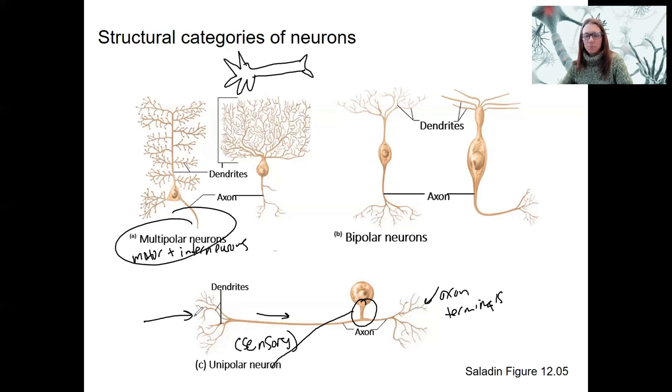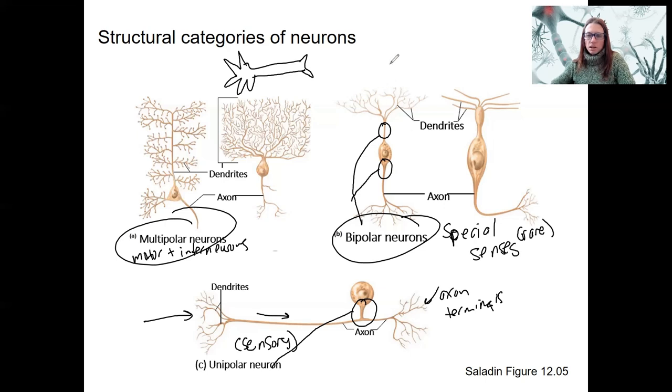Instead of a chemical stimulus signal, there are sensory neurons that detect chemicals though. Dendrites are where information is received. Bipolar, these are going to be our special senses. These are more rare, we won't see these until the end of the semester. Bipolar means two. In this case, dendrites information is coming this way and traveling out this way. Here is our axon terminals.